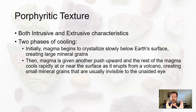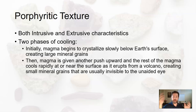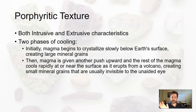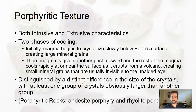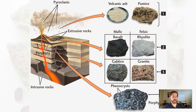However, for some reason — maybe there's another push from below — that magma, instead of cooling below ground, gets pushed up and extruded, coming out of a volcano. The rest of it then cools very quickly. So you already have material that began cooling with bigger mineral grains, and the rest of it has smaller mineral grains that cooled above ground.